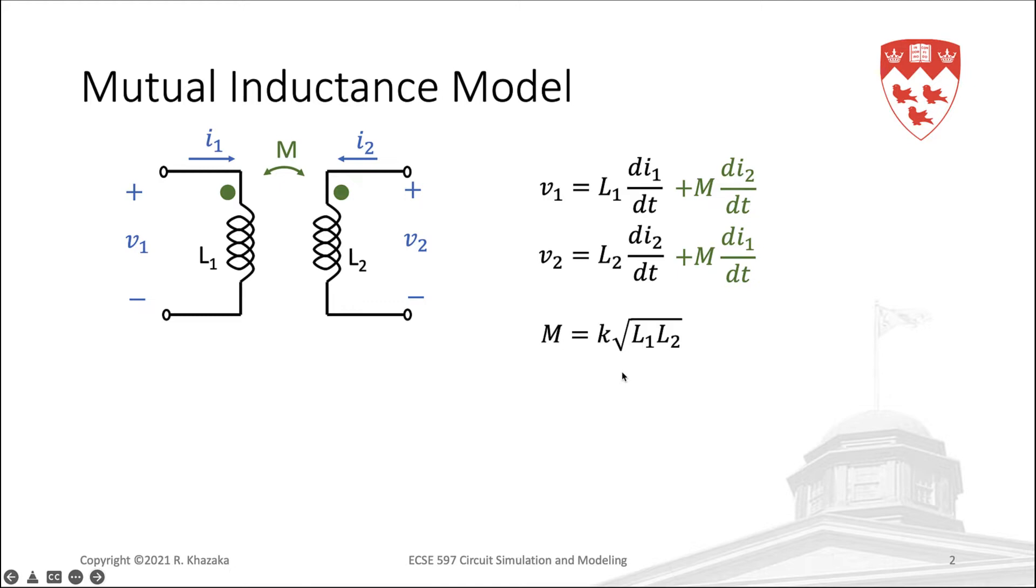When K is 0, there is no coupling. M is 0, and we are back to the simple inductor model. When K is 1, we have the ideal case of perfect coupling, where there is no leakage flux. And in the general case, K is between 0 and 1.